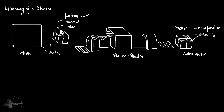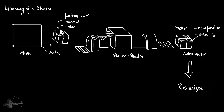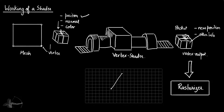This vertex output — the packet of new information given by the vertex shader — goes to the Rasterizer. The Rasterizer is a hardware unit which, based on certain rules, finds out which pixels of the screen will be covered by the geometric shape. So the first task of the Rasterizer is to find the pixels in the geometric region. If we have to draw a triangle on the screen, the Rasterizer will find out which pixels will be covered by this geometry.